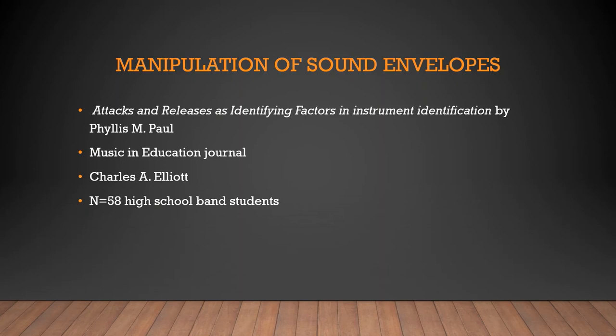Now that the importance of articulation's role when shaping the attack and release transits of a sound envelope has been explained, the effects of sound envelope manipulation will be explored. This last study by Phyllis M. Paul is a replication and extension of Charles A. Eliot's research titled, Attacks and Releases as Identifying Factors in Musical Instrument Identification. In Paul's research, it was published in the Research and Music Education Journal. Paul examined the effects of manipulating sound envelope components on high school band students' abilities to identify wind instruments. The instruments were oboe, bassoon, B-flat clarinet, tenor saxophone, trumpet, horn, trombone, euphonium, and tuba. The study group was 58 students and they were presented with recordings of instruments under three conditions, each in a random order.